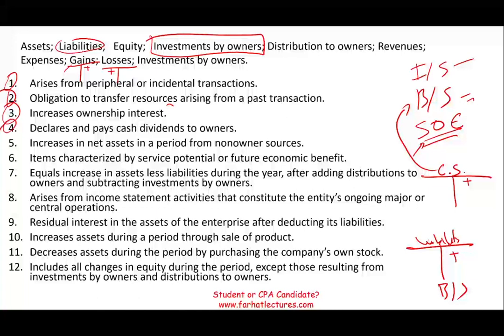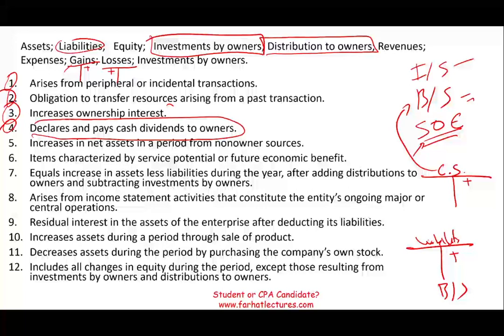Number four: declares and pays cash dividends to owners. What element does that describe? When you distribute profit from the company to owners, that's the definition of distribution to owners — declaring and paying dividends to owners.